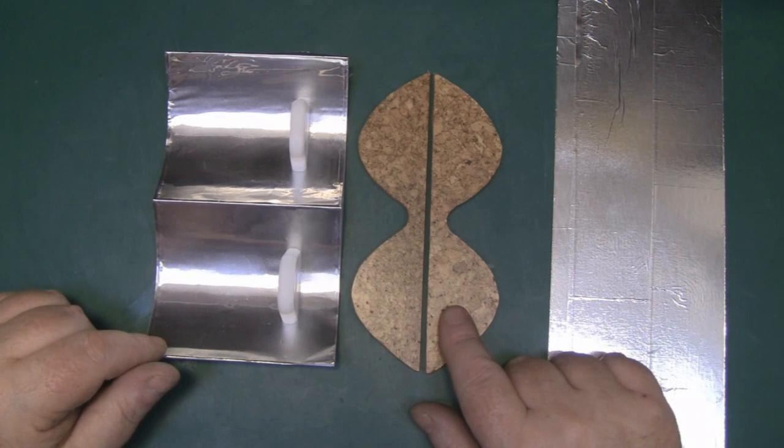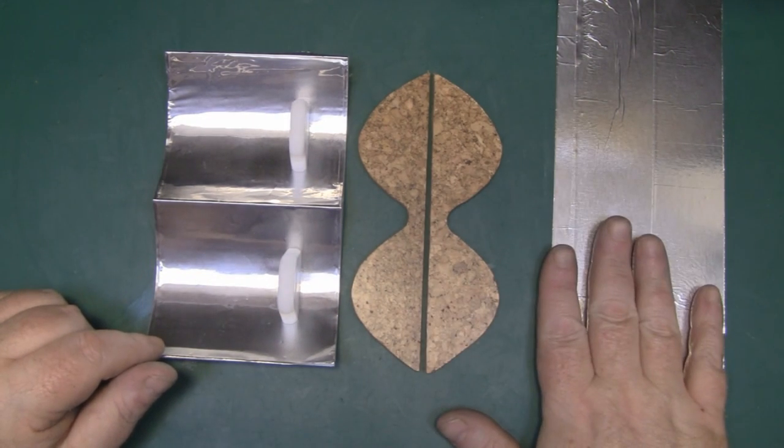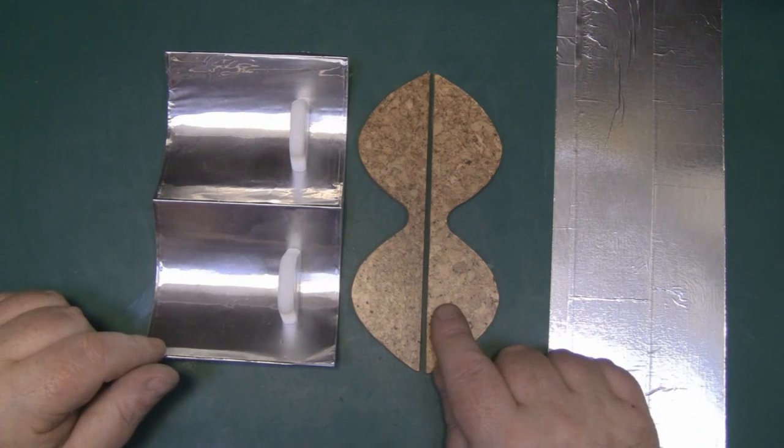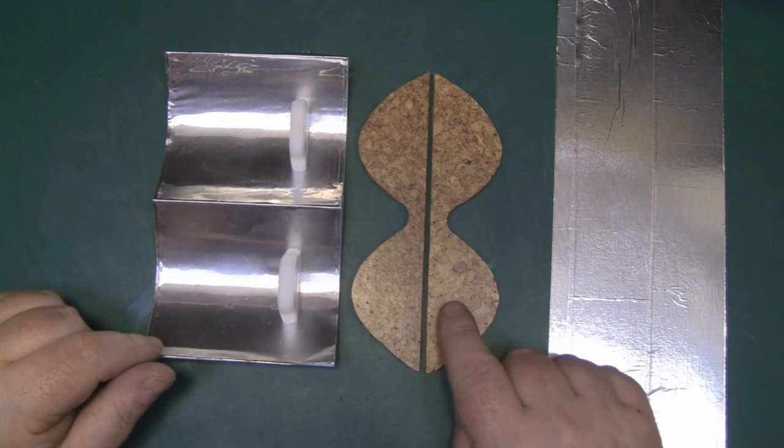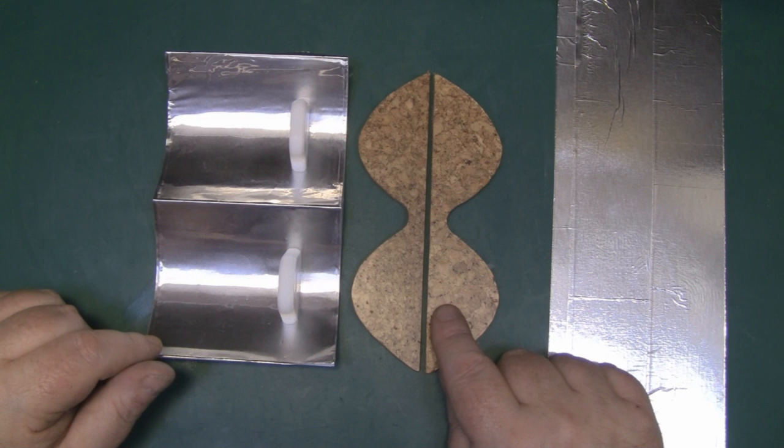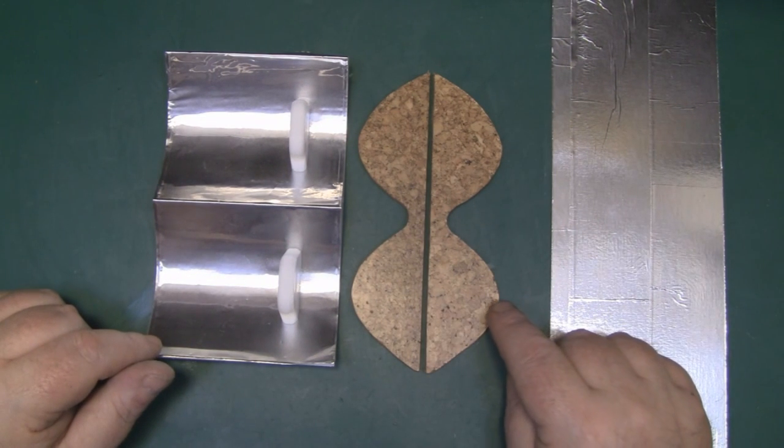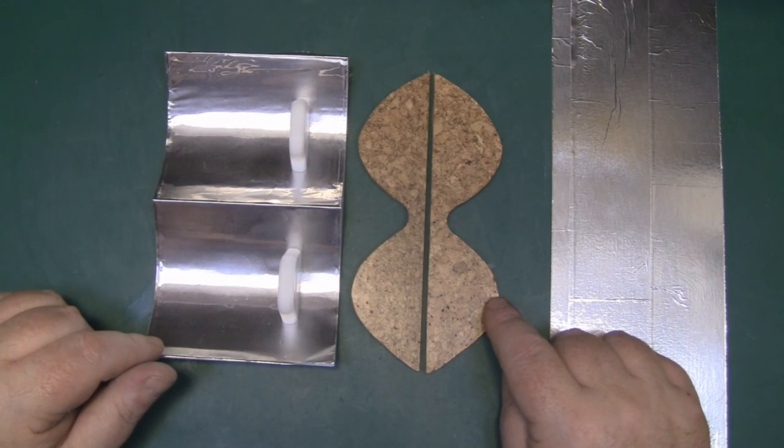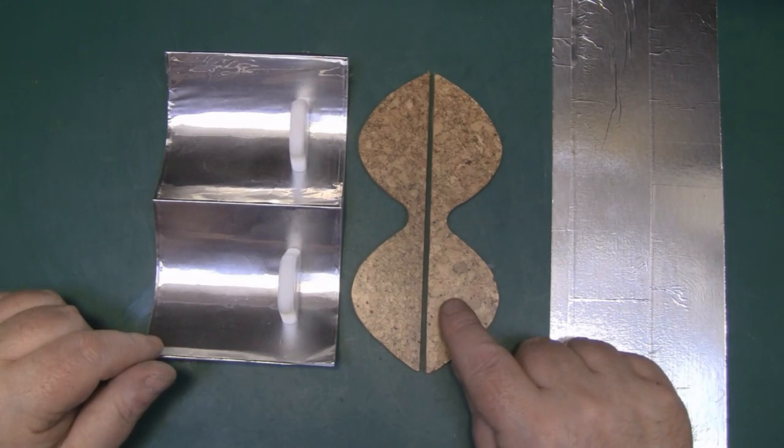So I've got the two parabolic shapes cut out of the cork, and now what I'm going to do before I actually start putting it all together is drill the hole for the focal point so I can put a dipole antenna through there. So I need to measure from the center of the parabolic curve here 14.2 millimeters.